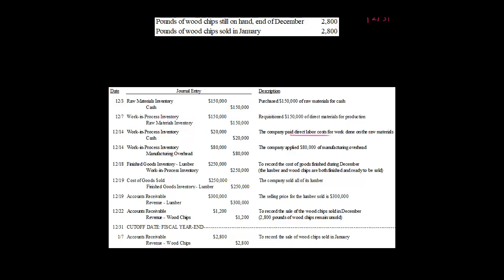Now we incur some direct labor costs — we debit WIP inventory again. The company applies $80,000 of manufacturing overhead; we debit WIP inventory again. So now WIP inventory has been debited for $150,000, $20,000, and $80,000, for a total of $250,000.